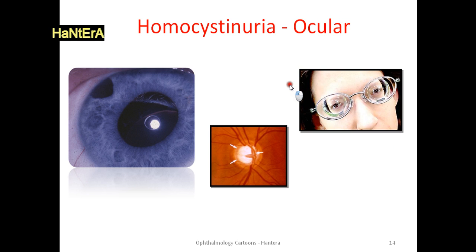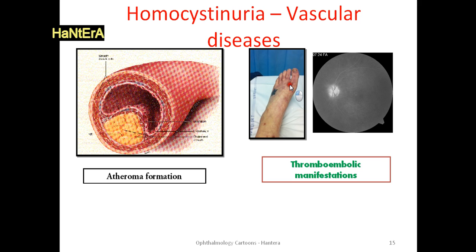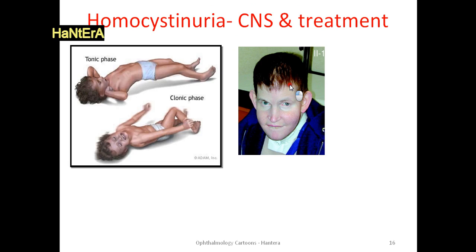Ectopia lentis with downward dislocation is common in homocystinuria. Patients are usually wearing myopic glasses. Fundus examination and IOP measurement are mandatory to exclude optic nerve cupping. Systemically, those patients suffer from atheroma formation and embolic manifestations, e.g., CRAO. It is common to have seizures and mental retardation.